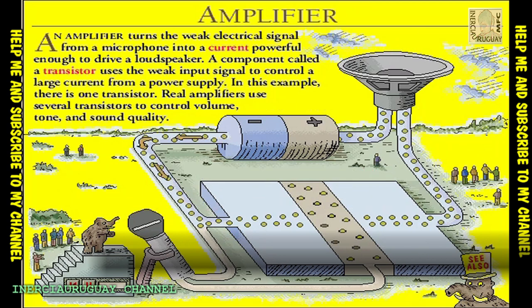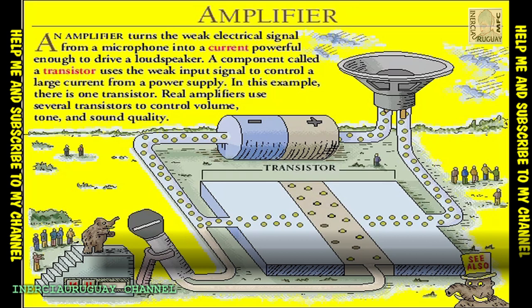A current of electrons from the battery's negative terminal moves across the transistor, through the loudspeaker, to the positive terminal.